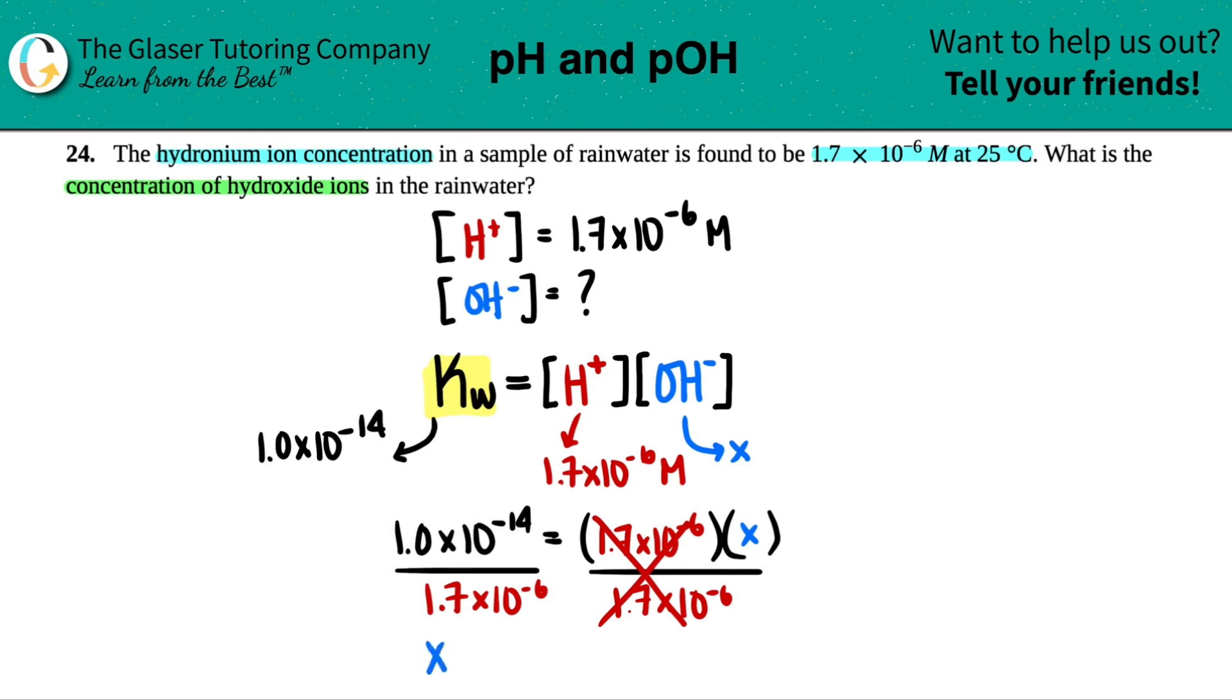Cancel this out. And now, the X, which is the OH minus. Let's just get it done. 1 times 10 to the negative 14th divided by 1.7 times 10 to the negative 6th. Let's put the answer here first. So this would be two sig figs, so 5.9.